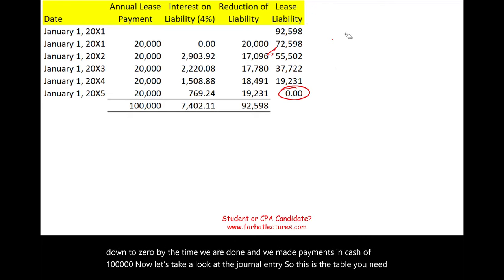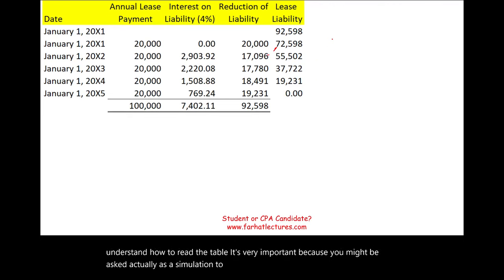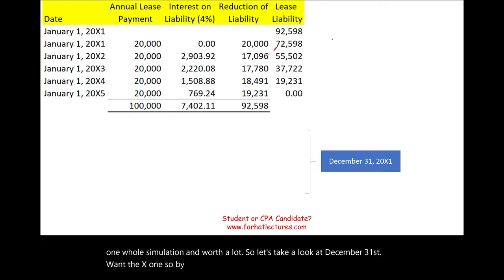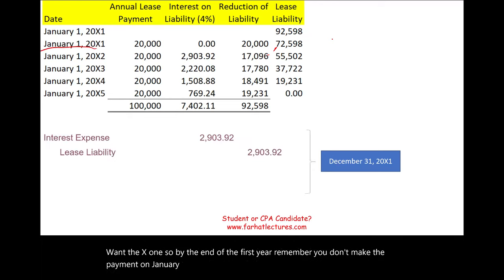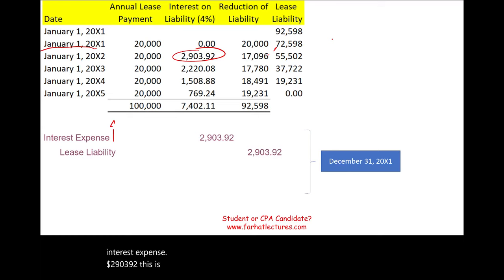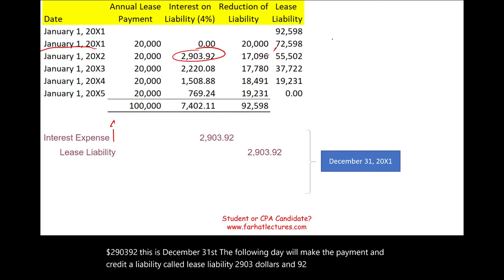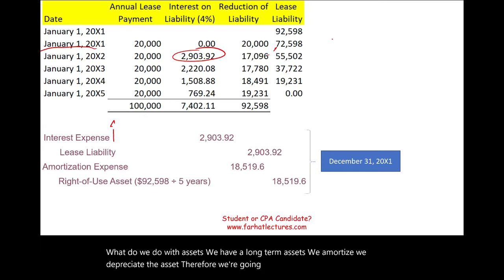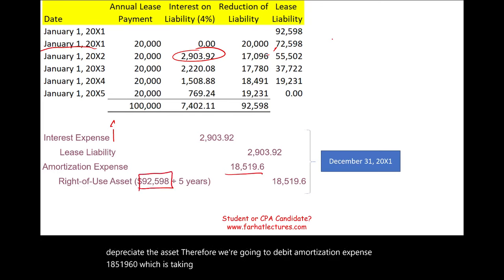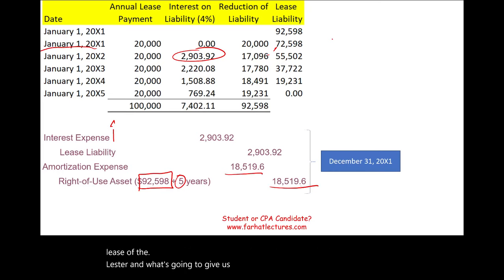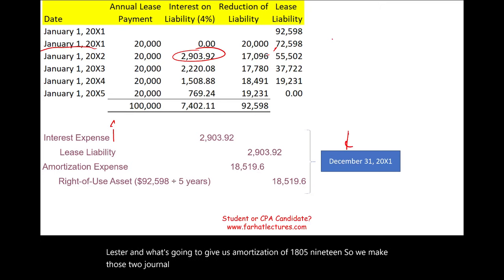This amortization schedule is important — you may be asked to prepare it as a simulation on the CPA exam. Now let's look at the journal entry for December 31st, X1. At year-end you debit interest expense two thousand nine hundred three dollars and ninety-two cents and credit lease liability for the same amount. You also debit amortization expense eighteen thousand five hundred nineteen dollars and sixty cents — which is the asset value of ninety-two thousand five ninety-eight divided by the five-year lease term — and credit accumulated amortization.